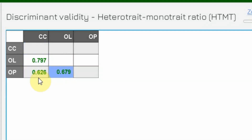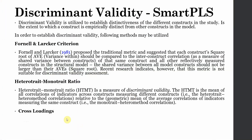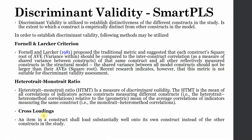In this case, all HTMT values are green and well below 0.85, meaning there are no issues of discriminant validity according to the Hetero-Trait Mono-Trait ratio — the constructs show distinctiveness. How to report all these results will follow in coming videos. Moving on to the final method of establishing discriminant validity: cross-loadings. An item in a construct should load substantially well onto its own parent construct rather than the other constructs in the study.